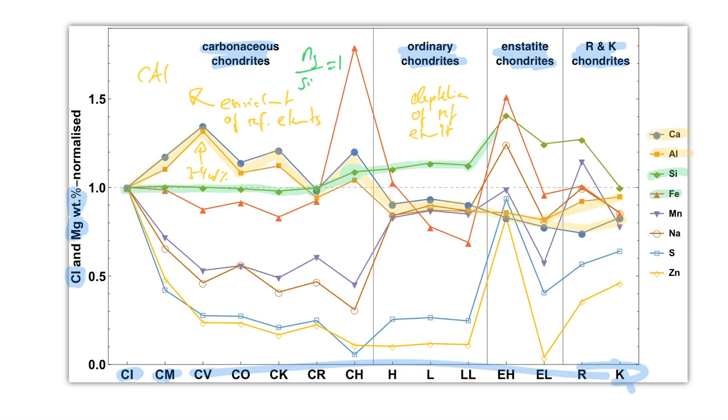However, silicon is then enriched in all the other chondrite groups to various extents. So there is an enrichment of silicon or a depletion of magnesium. This is not known yet. But this is a very important observation because these are two major elements and it requires the fractionation of a lot of material to achieve these changes in magnesium-silicon ratio.